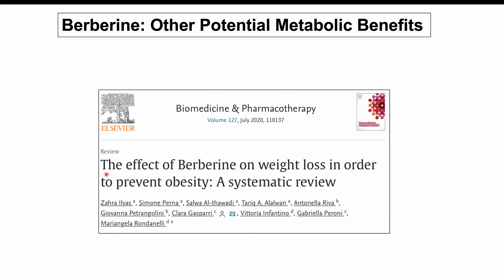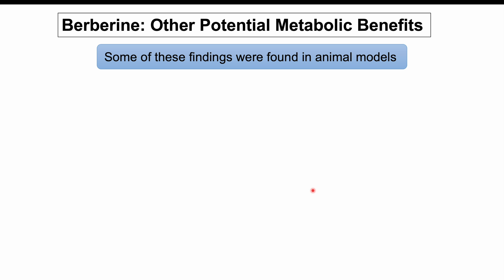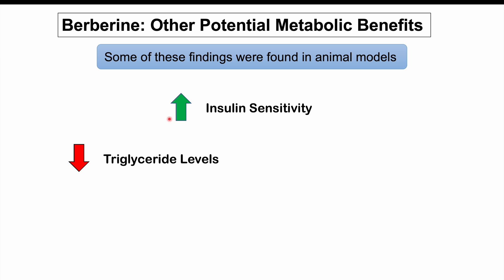There are other potential metabolic benefits discussed in a review article entitled 'The Effect of Berberine on Weight Loss in Order to Prevent Obesity: A Systematic Review.' Some findings were from animal models rather than humans. Studies found improvements in insulin sensitivity and fasting blood glucose — consistent with berberine's AMPK activation inhibiting gluconeogenesis in the liver and increasing glucose uptake via GLUT4 transporters in skeletal muscle through activation of TBC1D1.